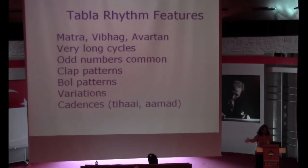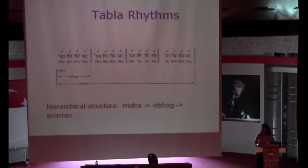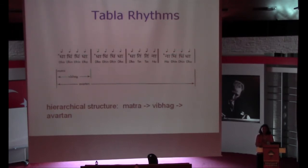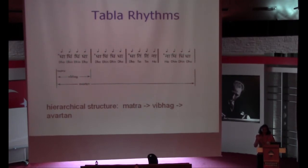The tihai shows you're reaching the sam — the beginning point of the cycle again. Here's a visual illustration: the rhythm depicted is the most commonly used teen tal, which is a 16-beat rhythm — four sections of four beats each. Each of those four sections is called a vibhag, and that entire 16-beat cycle defines an avartan.